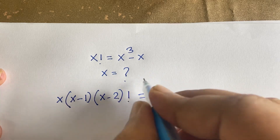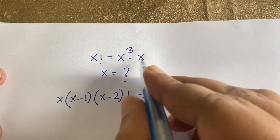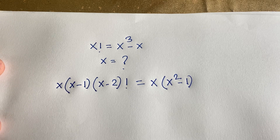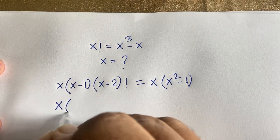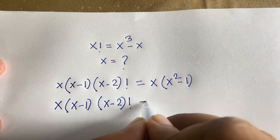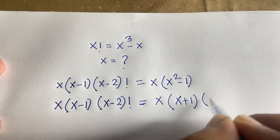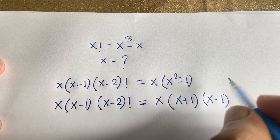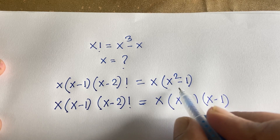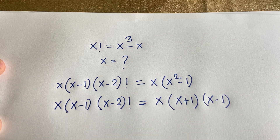So I can say here x is common. So x cube divide x will be x square, x divide x will be 1. Then I can see it will be x times x minus 1, x minus 2 factorial is equal to x times x plus 1, x minus 1. According to the algebra identity, x square minus b square will be a plus b times a minus b. So x square minus 1 will be x plus 1 times x minus 1.